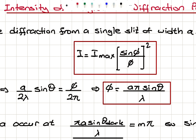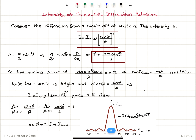Sine of the phase difference divided by the phase difference, squared, is our intensity distribution. I'm going to give a link for the proof of this intensity distribution. Basically, we have to look at the electric field phasors, and the intensity will be proportional to E_max squared — the electric field maximum value squared.